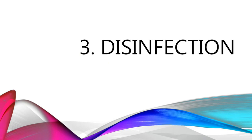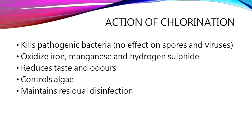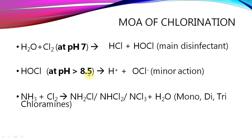The last step is disinfection, usually done with chlorine. Criteria for a good disinfectant: should not be influenced by water properties, should act within a short time, should not be toxic or impart color, water should remain potable (drinkable), should be cheap and easy to use, should leave a residual concentration to deal with contamination, and should be easily detectable. Chlorination kills pathogenic bacteria, oxidizes iron, reduces taste and odor, and controls algae. When water and chlorine combine, they form hypochlorite and hydrochloric acid, which then dissociate further.